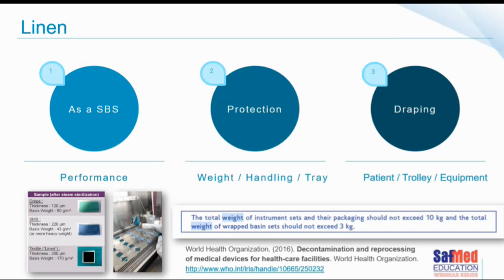Regarding linen: in the CSSD and operating room, linen can be used as a sterile barrier system, for protection around a sterile barrier system, or for draping a patient, trolley, or equipment. In the South African setting, for many years we have used sterile barrier systems as trolley drapes — and sometimes as patient drapes. But there are different standards for these products, so we need to understand the difference between what sterile barrier systems are designed for and what they are not designed for.